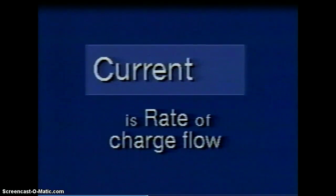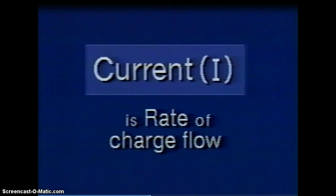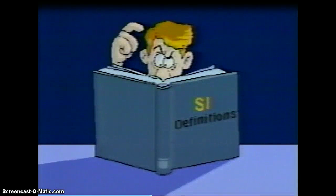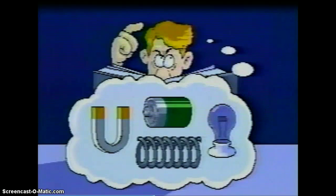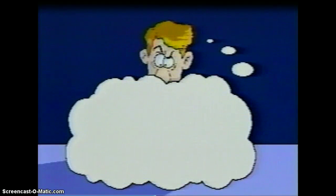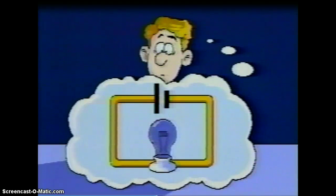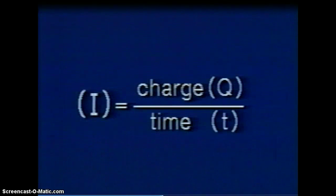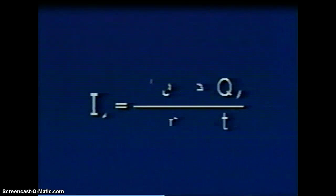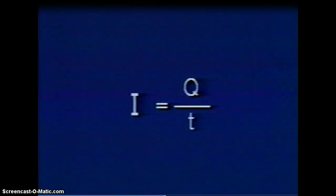The word current is used to denote this rate of charge flow. It is given the symbol I and is an important characteristic of a circuit. In the modern metric system, the unit for current is defined in terms of the magnetic field it produces. In this program, however, we will define the unit for current in a more traditional way that is easier to visualize. Current is defined as the amount of charge that passes a specific point divided by the time it takes to do so. This equation is usually abbreviated to look like this.